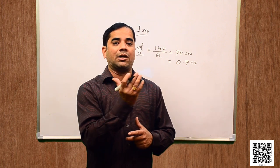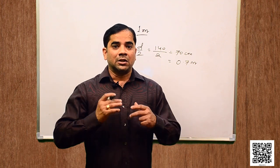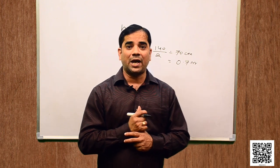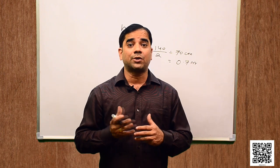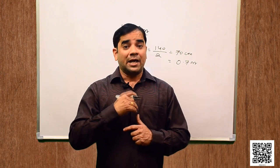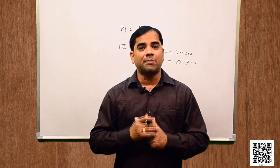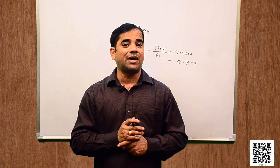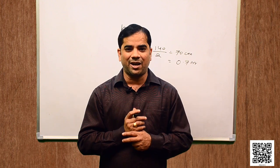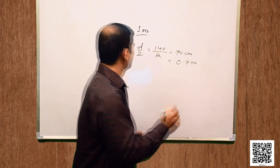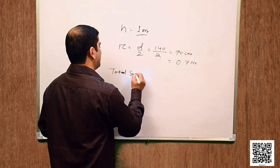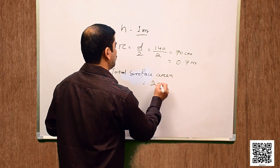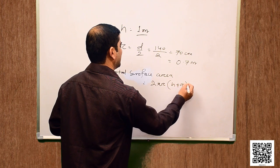The area of sheet required is the total surface area of the tank. Why? Because we are making a tank which is closed from top and bottom. So, the areas of the top and bottom of the cylinder are included, which means we are going for total surface area. Total surface area is 2πr(h + r).